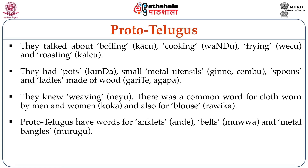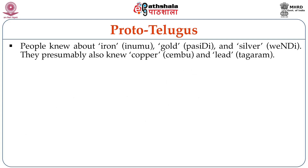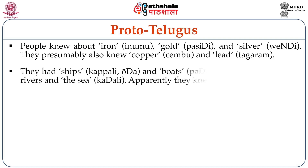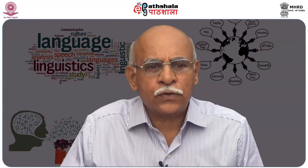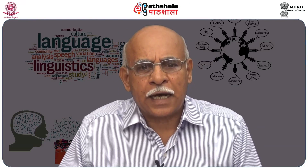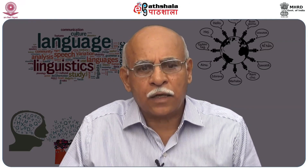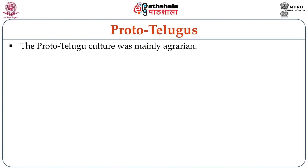Proto-Telugus had words for anklets (ande), bells (muve), and metal bangles (murugu). People knew about iron (inumu), gold (pasidi), and silver (vendi). They presumably also knew copper (chambu) and lead (tagaram). They had ships (kappali, voda) and boats (padawa) for journeys through rivers and the sea (kadali). Apparently they knew sea trade. They used bows (villu) and arrows (ambu) and hunted for pleasure (venta) or desire (vendu). Among other weapons, they used knife (kati), spear (eti), axe (godali), stick (kola), and club (gudiya). The proto-Telugu culture was mainly agrarian.